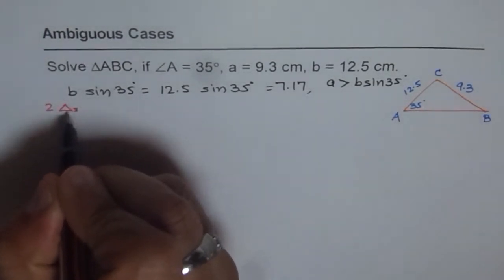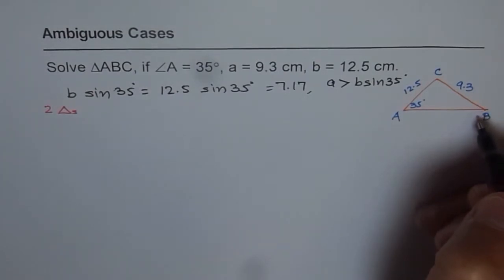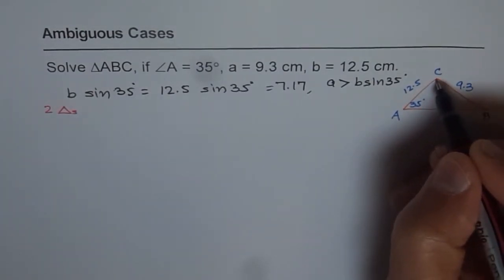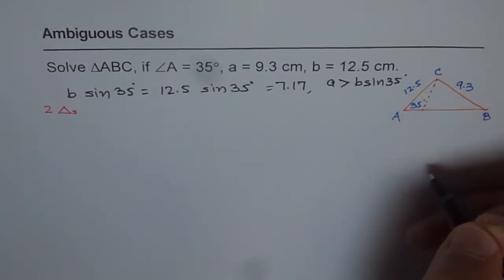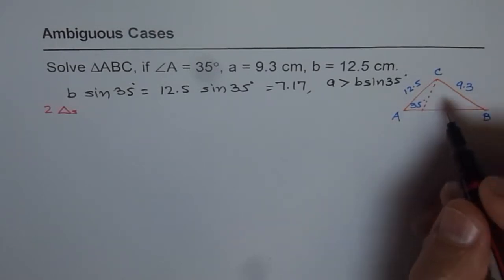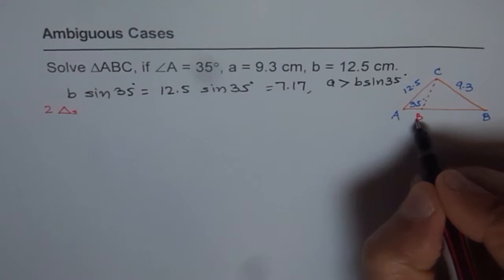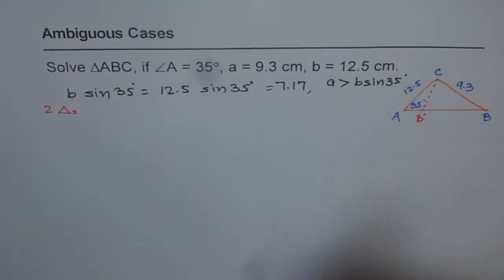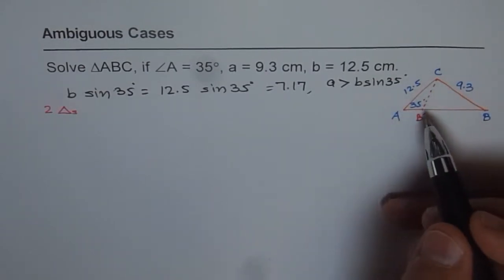So we are looking for two triangles in this case. This is not to scale. One triangle will be something like I have drawn, and the other one will be kind of like this. These are the two triangles which can be formed in this particular case. Let me call this point B dash.